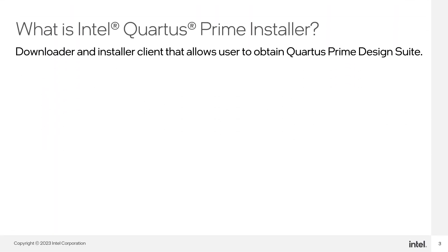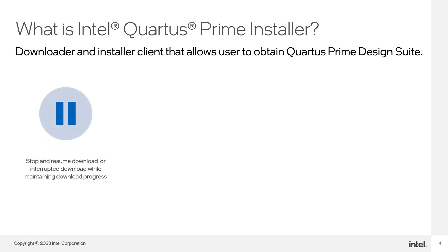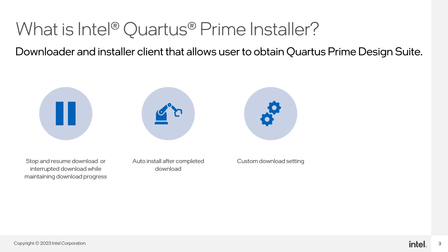Intel Quartus Prime Installer is a lightweight downloader and installer client that allows users to download Quartus components such as Agilex 7 device support and add-on software like DSP Builder. Users can stop and resume their download, or interrupt the download progress at any point in time. It supports auto-installation once user-selected components finish downloading. Users can customize their download settings, which will be discussed further in the Features Highlight section.